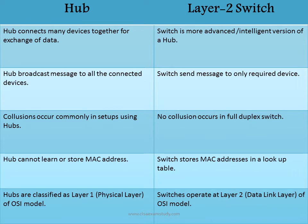Hub connects many devices together for exchange of data. Switch is a more advanced, intelligent version of a hub. Hub broadcasts messages to all connected devices whether they require it or not, while switch sends messages to only the required device. Collisions occur commonly in setups using hubs; no collision occurs with a switch. Hub cannot learn or store MAC addresses, whereas switch stores MAC addresses in a lookup table. Hubs are classified as layer 1 (physical layer) and switch operates at layer 2 (data link layer) of the OSI model.